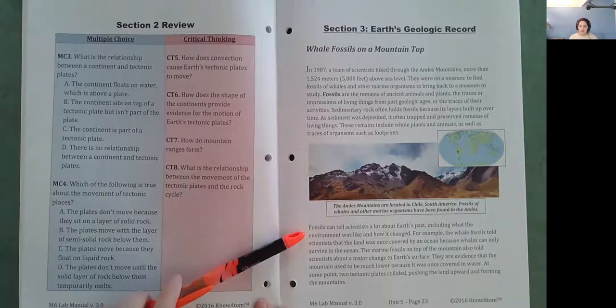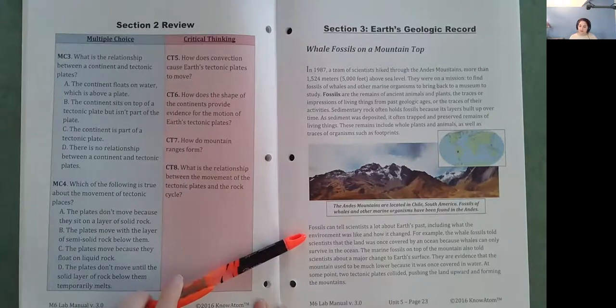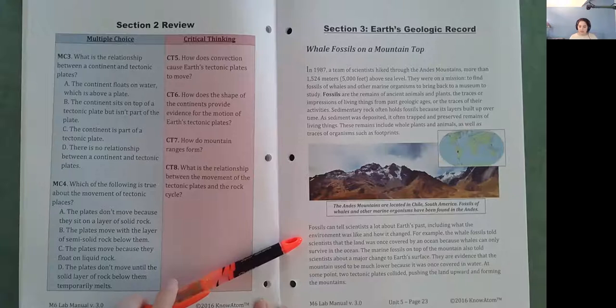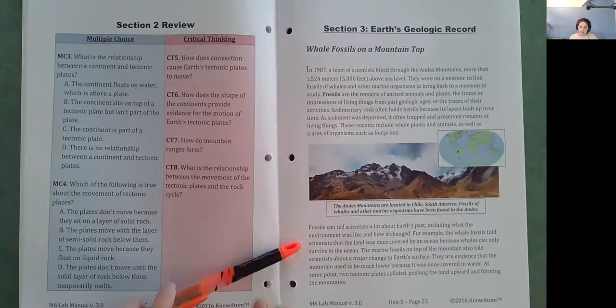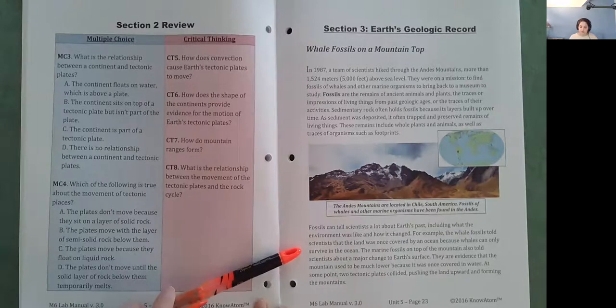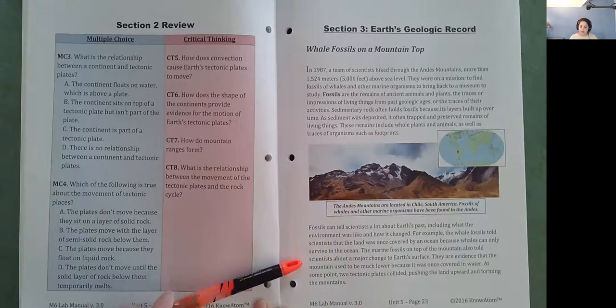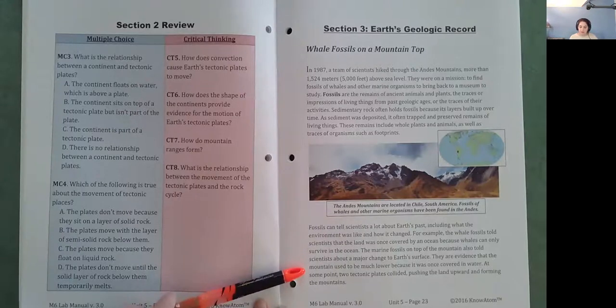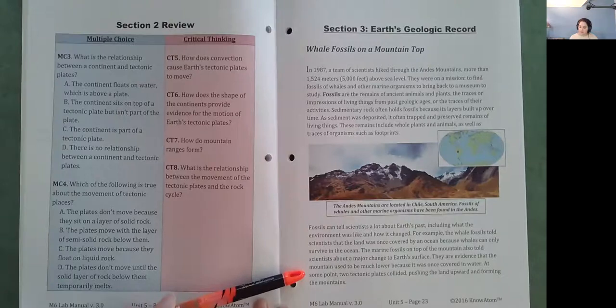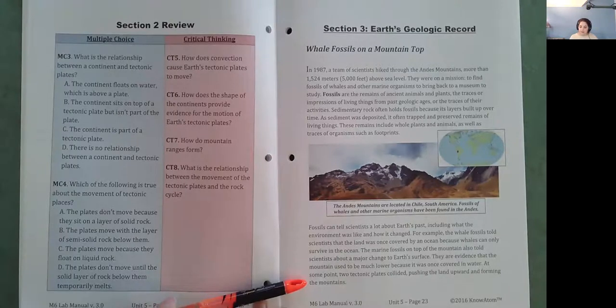Fossils can tell scientists a lot about Earth's past, including what the environment was like and how it changed. For example, the whale fossils told scientists that the land was once covered by an ocean because whales can only survive in the ocean. The marine fossils on top of the mountain also told scientists about a major change to Earth's surface. They are evidence that the mountain used to be much lower because it was once covered in water. At some point, two tectonic plates collided, pushing the land upward and forming the mountain.